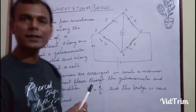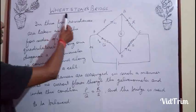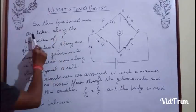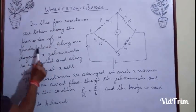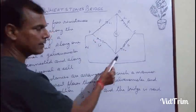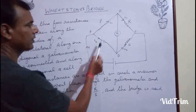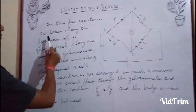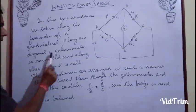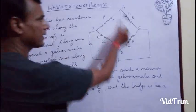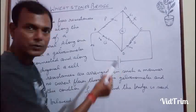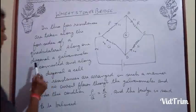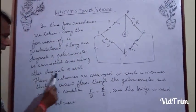Another important topic is the Wheatstone bridge. In a Wheatstone bridge, four resistances are taken along the four sides of a quadrilateral. The quadrilateral has two diagonals. Along one diagonal, a galvanometer is connected, and along the other diagonal, a cell is connected.